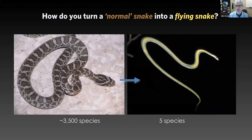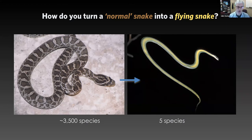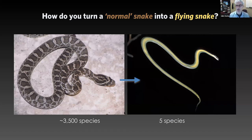Let's get into it. A main focus of our lab centers around this simple question: how do you turn a normal snake, like the one on the left, into a flying snake, like the one on the right? Of the roughly 3,000 to 4,000 snake species, only five are flying snakes, and they're all closely related — they're in the same genus.